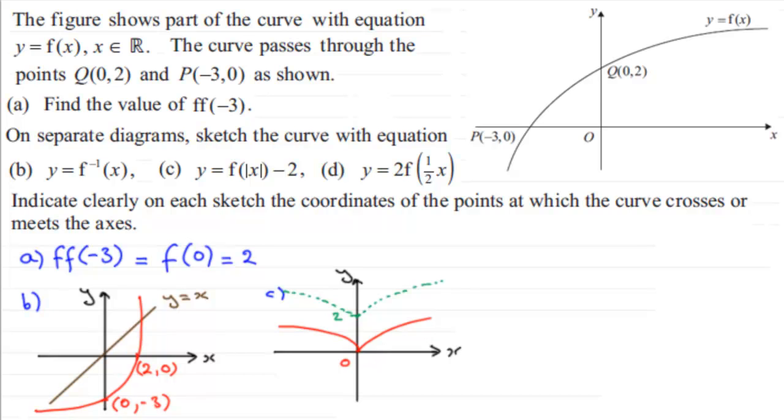Now in the last part, part d, 2f of a half x. This is going to be a combination of two transformations. We look at doing f of a half x. And what that does is it takes our original graph and it pulls it outwards parallel to the x axis. A stretch, in other words, by a scale factor of 2. And the point Q stays invariant.